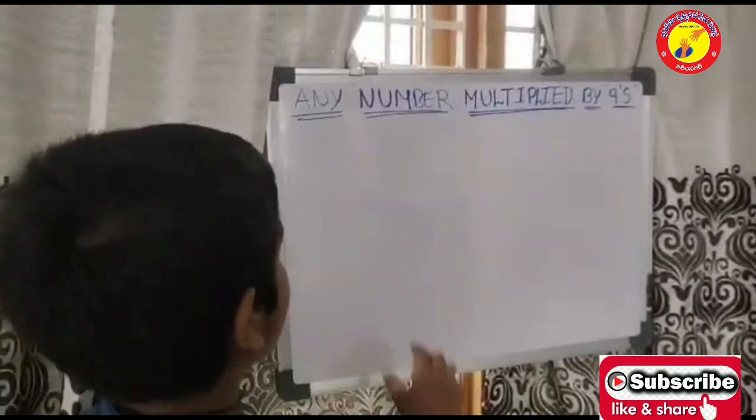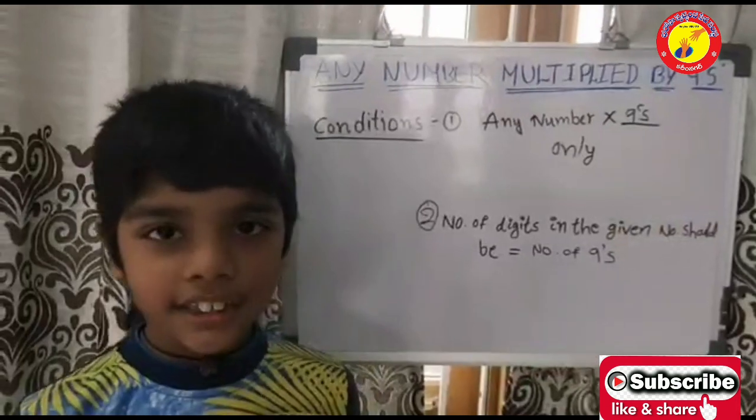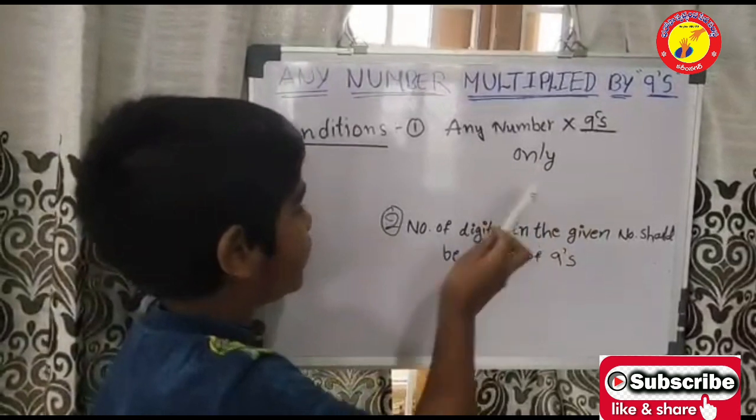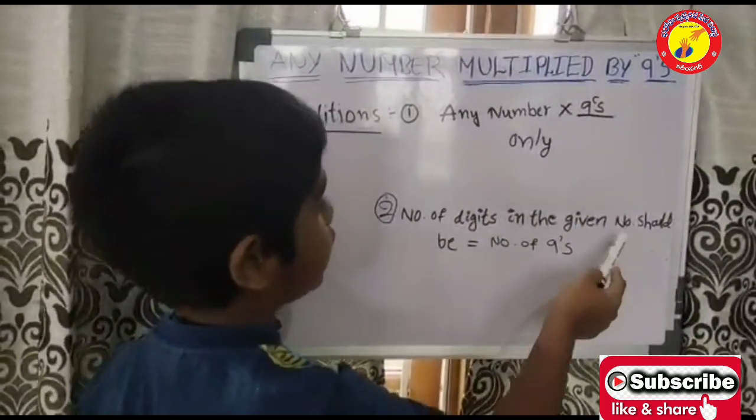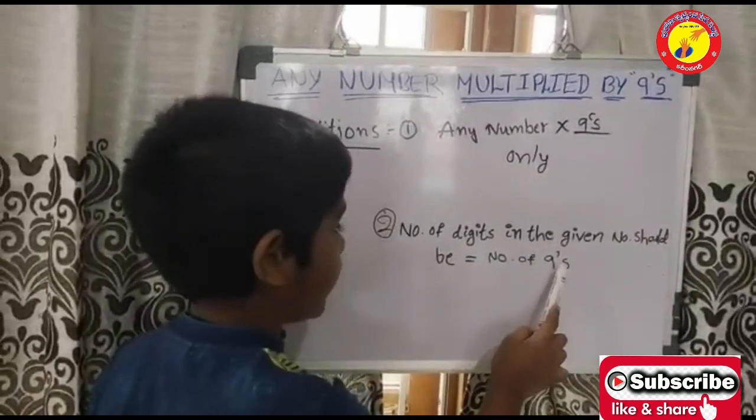I will tell you basic math tricks. First trick name is any number multiplied by 9's. Number 1, any number multiplied by 9's only. Number 2, number of digits in the given number should be equal to number of 9's.